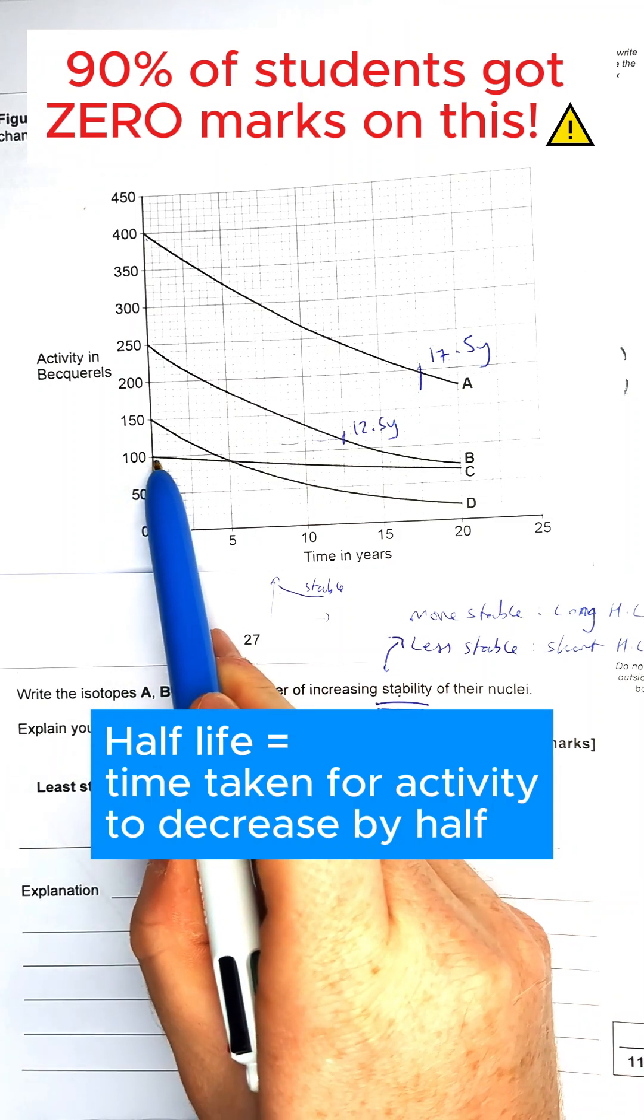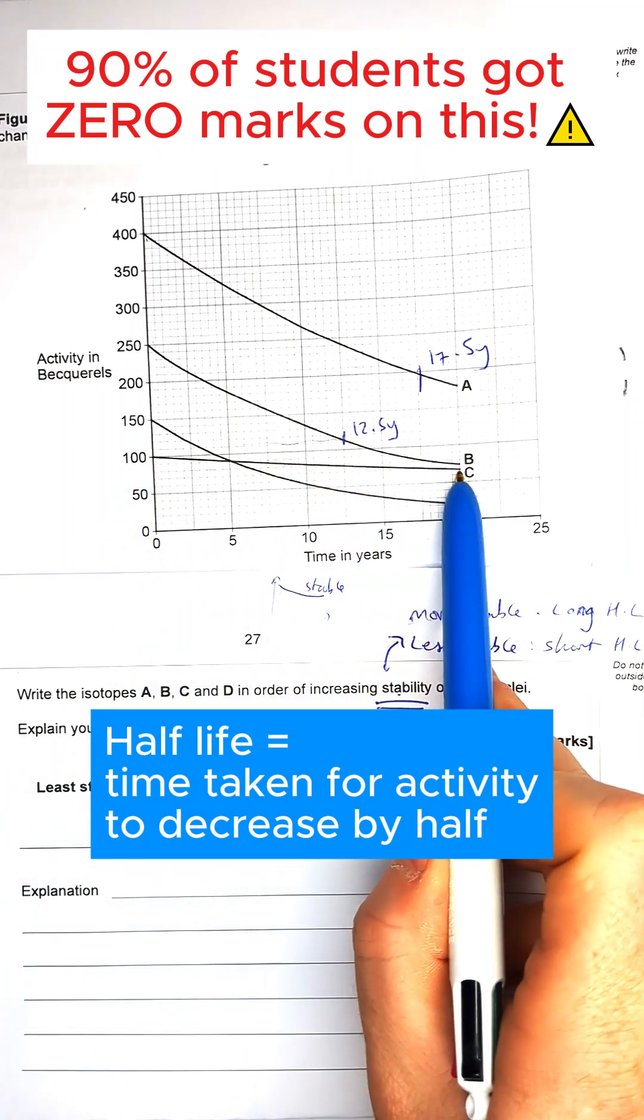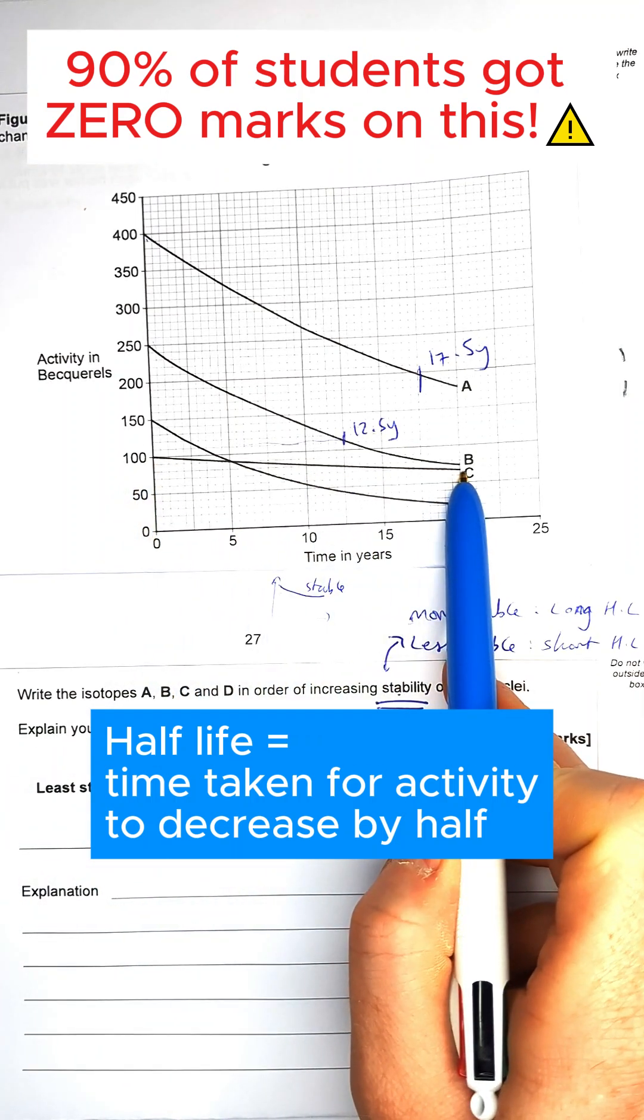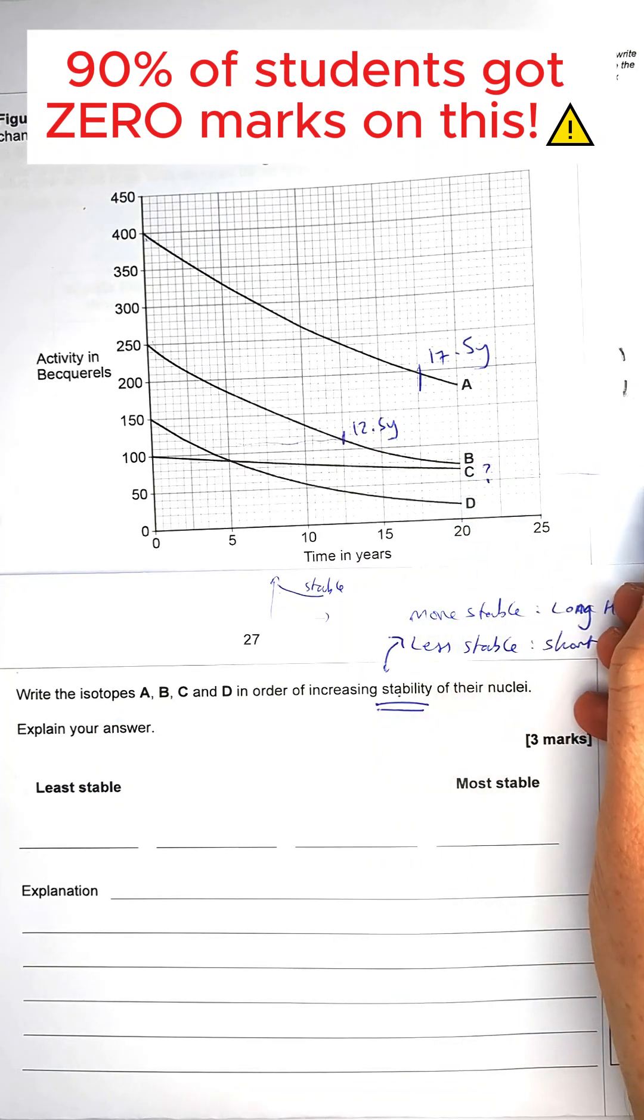Next we've got C, which is going to go from 100. We don't even see where the half-life is, so we don't know where the half-life is for this one, but we know it's longer than the graph.